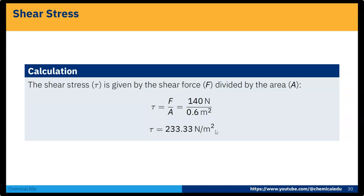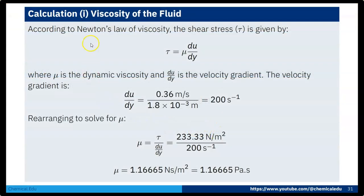After getting shear stress, now we have to calculate the velocity gradient. According to Newton's law of viscosity, shear stress τ = μ × (du/dy). To calculate the velocity gradient, we consider that the bottom plane is fixed and not moving. So the velocity difference is 0.36 m per second, and dy is the fluid film thickness of 1.8 × 10⁻³ m. Therefore du/dy = 0.36 / (1.8 × 10⁻³) = 200 s⁻¹.